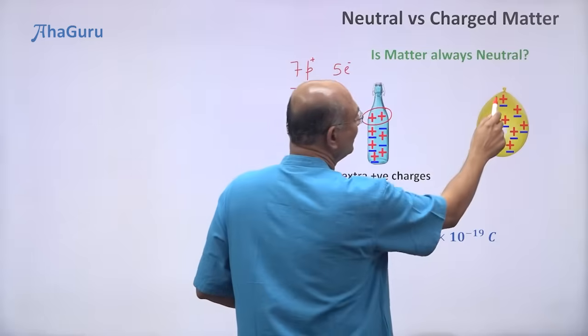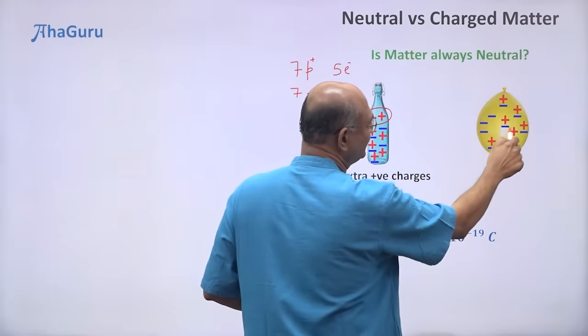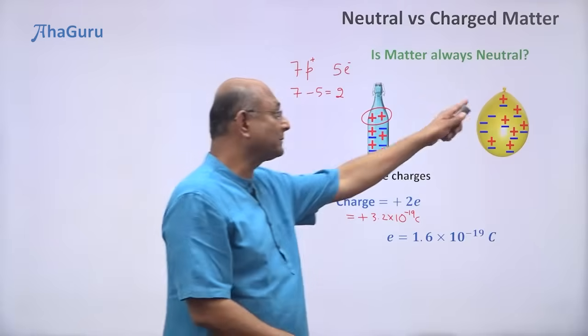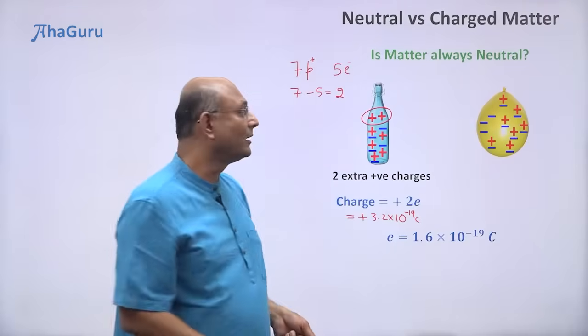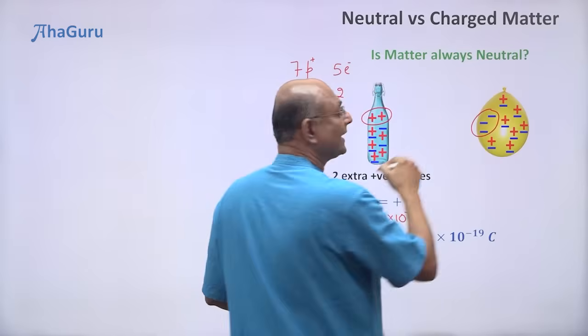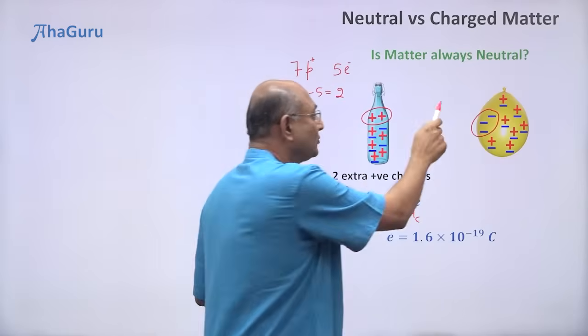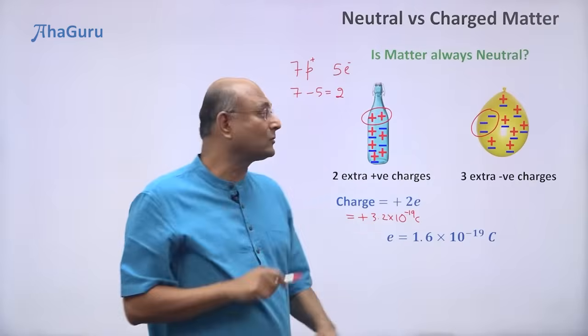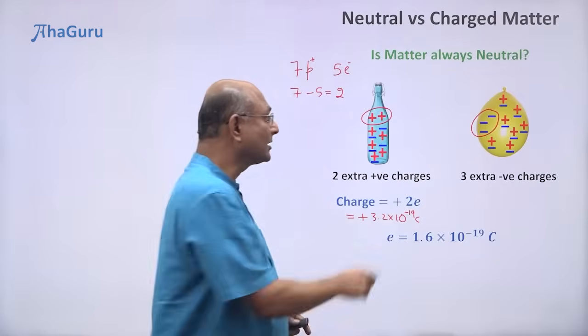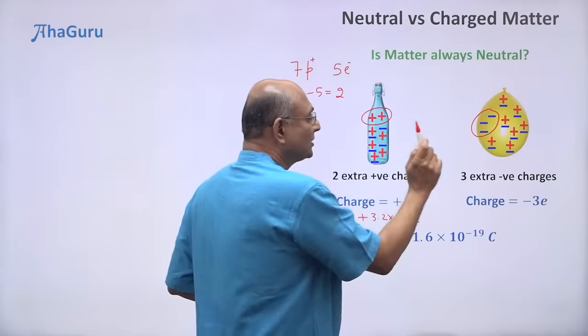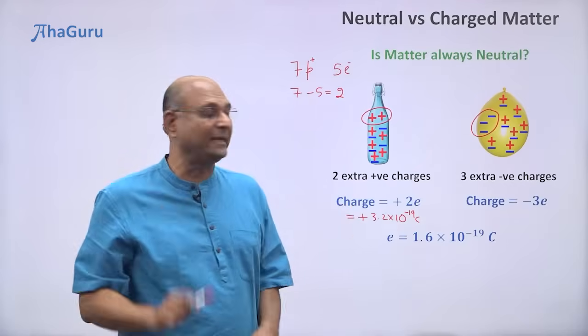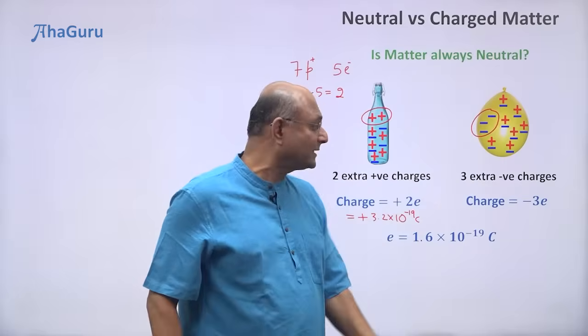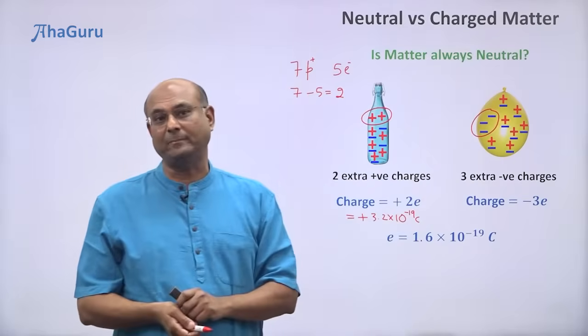Similarly, let us look at this balloon. You have plus minus, plus minus, plus minus. You have a lot of neutral atoms. All the neutral atoms, the net effect will be zero. But there are these three excess electrons. So that means you have three negative charges. So what will be the total charge on this balloon? Only because of these three excess electrons. So it is going to be minus 3E.